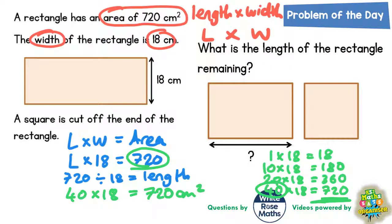So now that we know the length of the rectangle, we can write it onto the diagram. So the length is 40 centimetres.